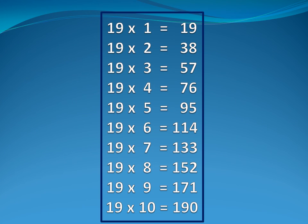Now nineteen table. Nineteen one is nineteen. Nineteen two is thirty-eight. Nineteen three is fifty-seven. Nineteen four is seventy-six. Nineteen five is ninety-five.